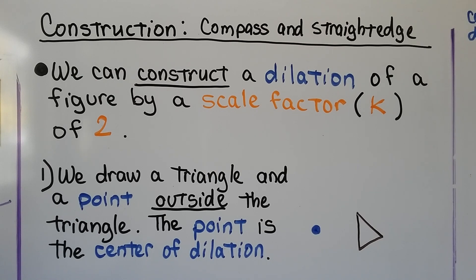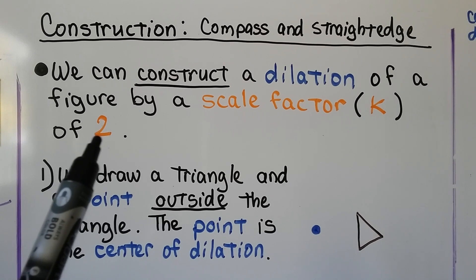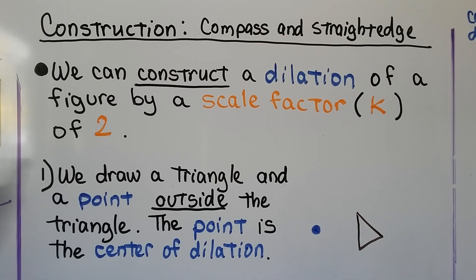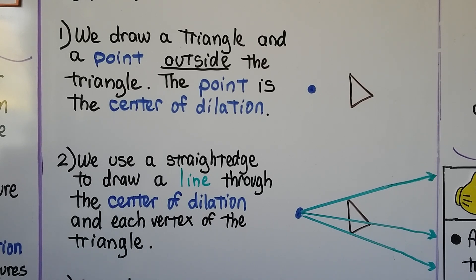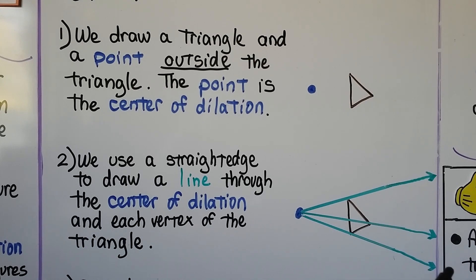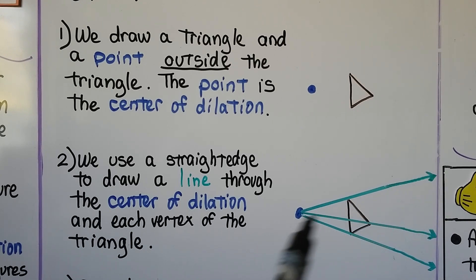For the construction of a dilation, you're going to need a compass and a straight edge. We can construct a dilation of a figure by a scale factor k — and that'll be a two, so our scale factor is going to be two. The first thing we do is draw a triangle and a point outside the triangle, and that point is going to be the center of dilation.